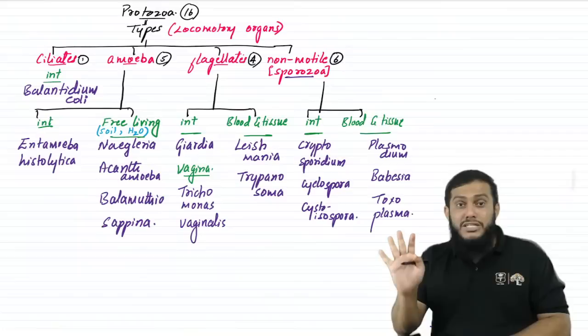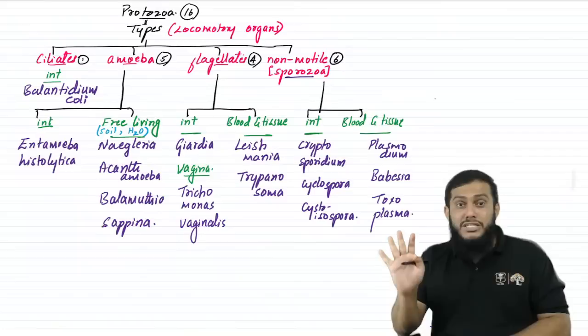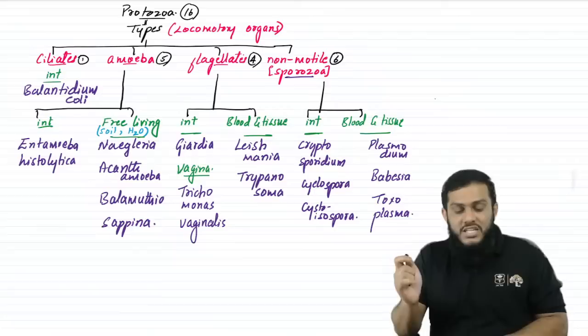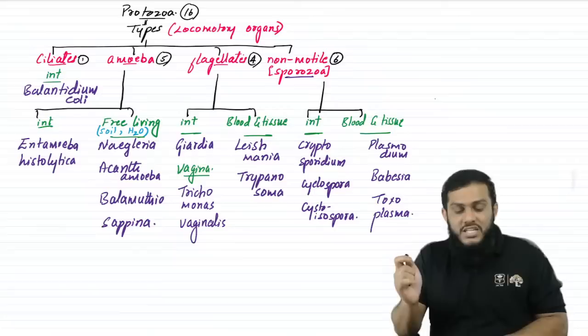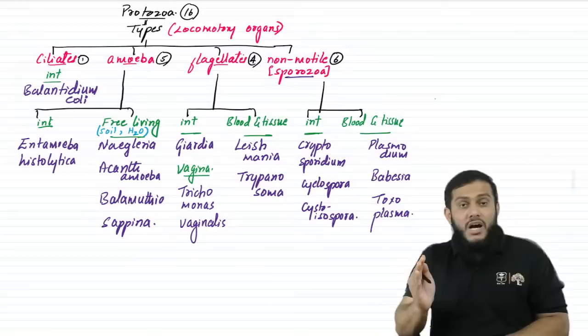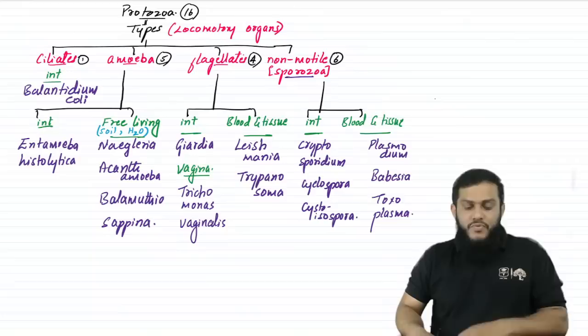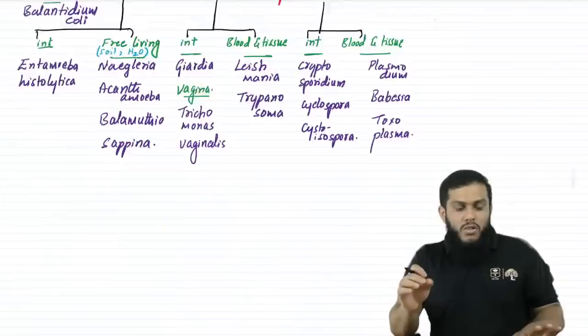The few protozoa that don't have cysts and have only trophozoit can infect as trophozoit because there is no other option. Based on habitat, we discuss protozoa in four groups: free-living, vaginal, intestinal, and blood and tissue. Free-living and vaginal and intestinal protozoa have only one host — man. Blood and tissue protozoa have two hosts: the vector and man, because they are present inside a vector.